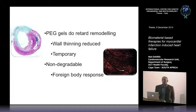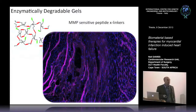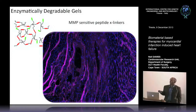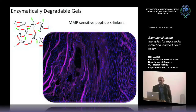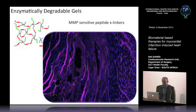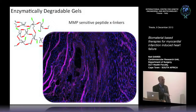From there we decided to stop with non-degradable gels and look at our enzymatically degradable gels. These are injected into the heart and form just as nicely as the non-degradable gels, but we have MMP-sensitive peptide cross-linkers. This particular peptide is sensitive to a wide range of MMPs.